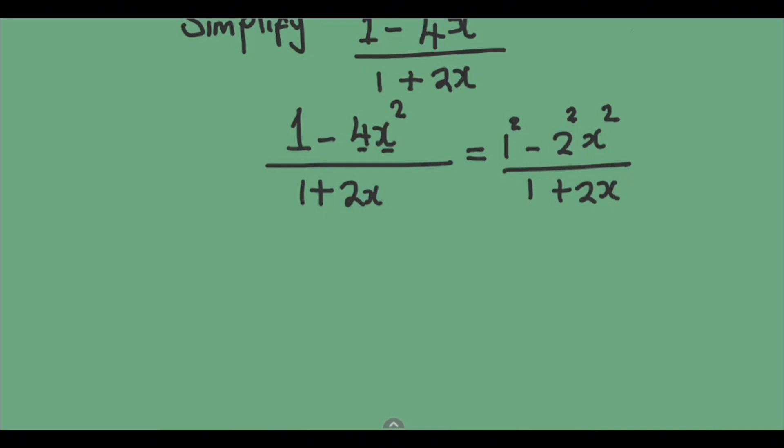Then this 4 can be written in index form, where we write 2 to the power 2, the same as 4. Then this x is already squared. So from this now, we can generate the idea of difference of 2 squares.